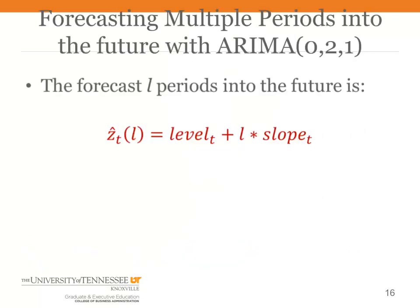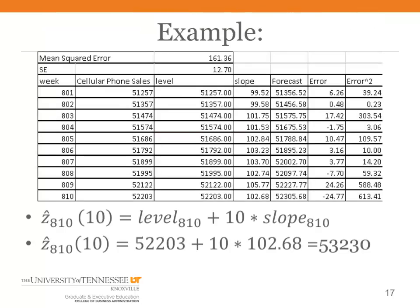And if we're forecasting multiple periods into the future, we just take the current level and add L times the current slope. If we want to forecast what's going to happen in let's say period 820 and it's currently period 810, we will be forecasting 10 periods into the future. So the forecast would be the current level plus 10 times the slope. And that gives you your forecast there.